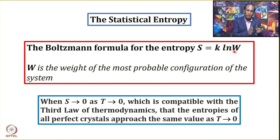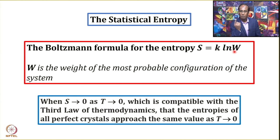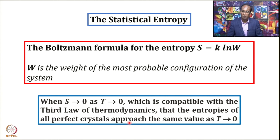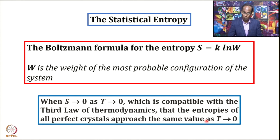If all molecules are in the ground state, there is only one way that configuration can be achieved, so W approaches 1. If W approaches 1, log W approaches 0, meaning S approaches 0 as T approaches 0. This is compatible with the third law of thermodynamics, which states that the entropies of all perfect crystals approach the same value as T approaches zero, becoming zero for perfectly crystalline substances.